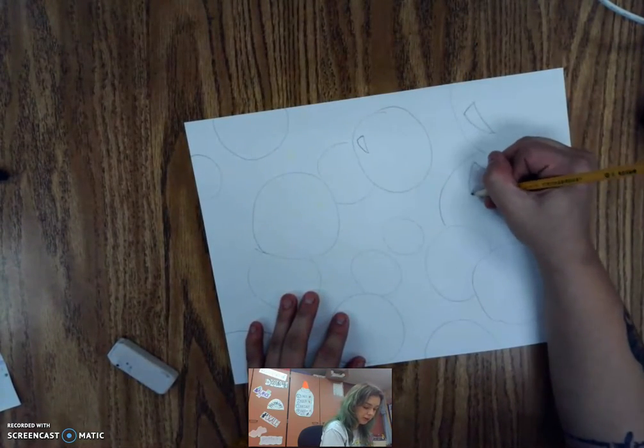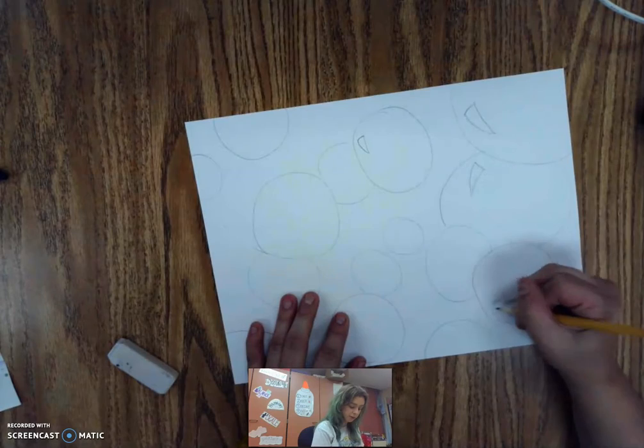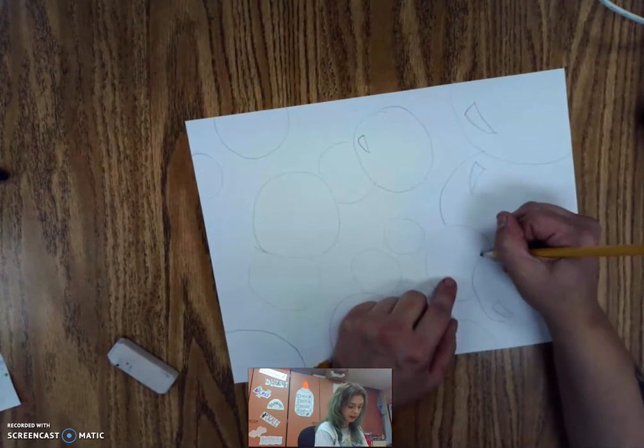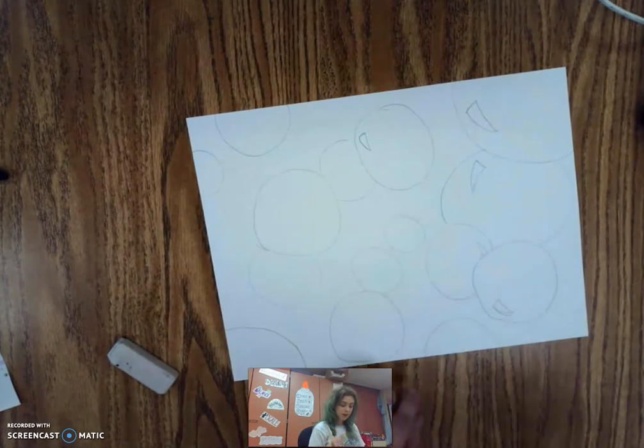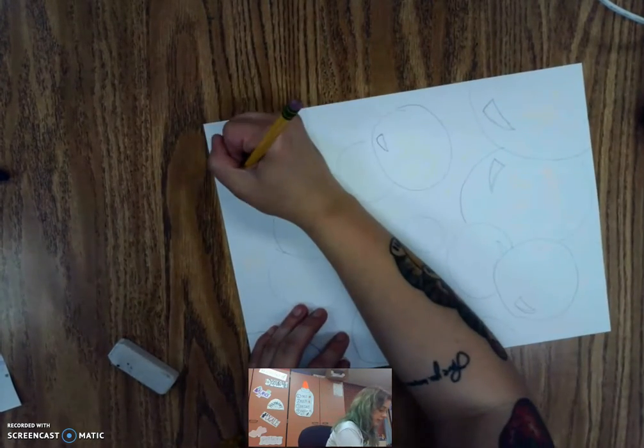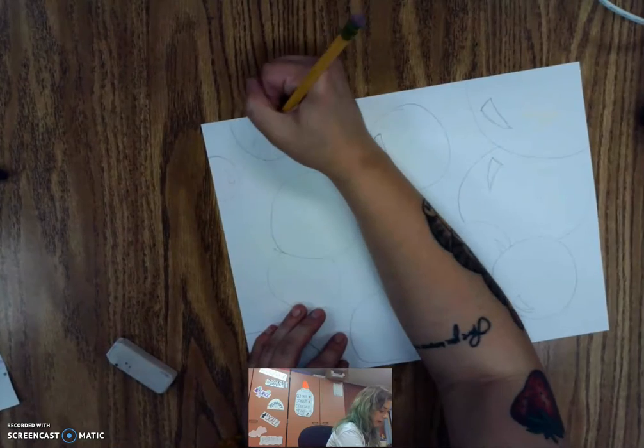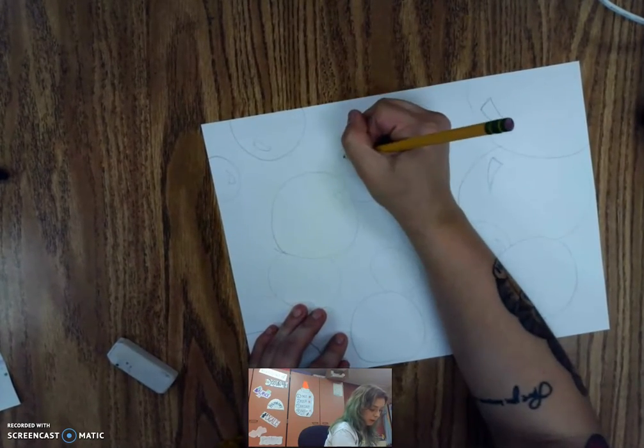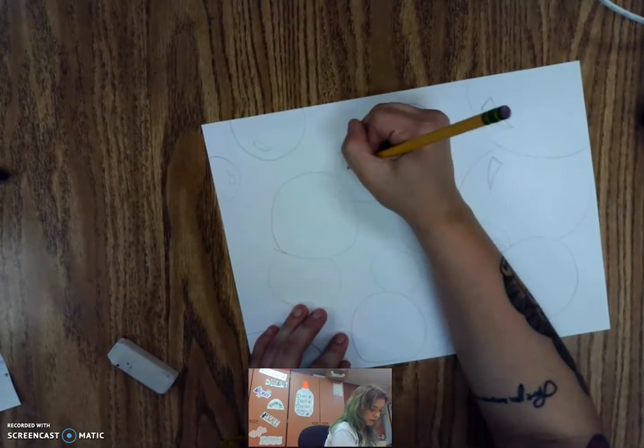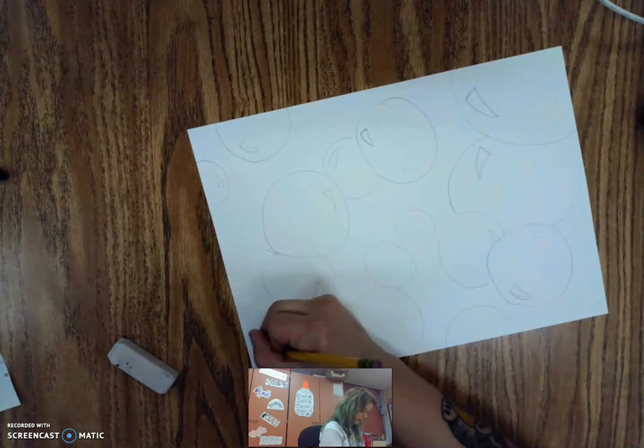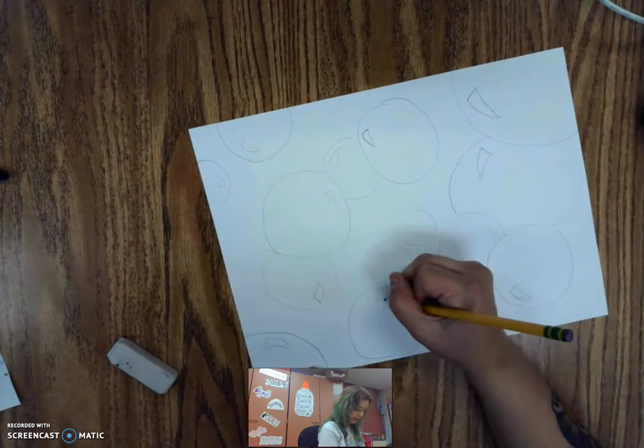And so I'm going to go through and draw my highlights on my bubbles. Some might not show like this one's in the background, so maybe the highlight's like coming out like that. Or maybe it's off the edge, so it doesn't need a highlight. But I'm going to go through and add highlights to all of my bubbles. And like I said, it's two curved lines like that.